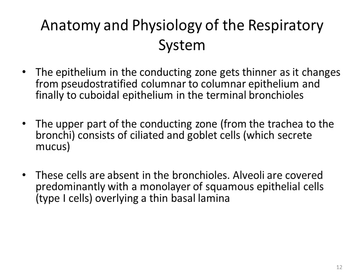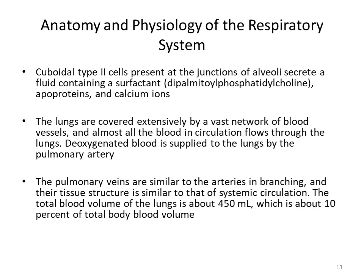The upper part of the conducting zone — from trachea to bronchi — consists of ciliated and goblet cells which actually secrete mucus. Ciliated cells and goblet cells are absent in the bronchioles. Alveoli are covered predominantly with a monolayer of squamous epithelium cells, also called type 1 cells, overlaying a thin basal level. Cuboidal type 2 cells present at the junction of alveoli secrete a fluid containing a surfactant called dipalmitoyl phosphatidylcholine, apoproteins, and calcium ions.